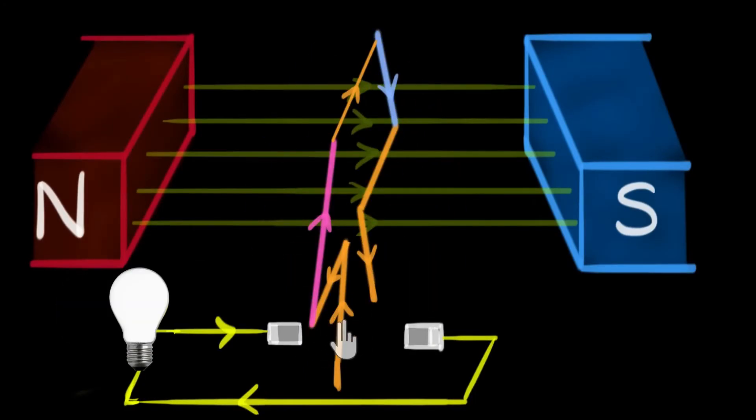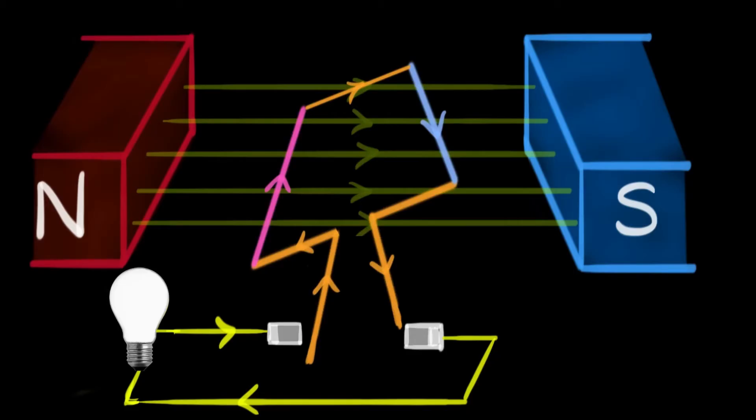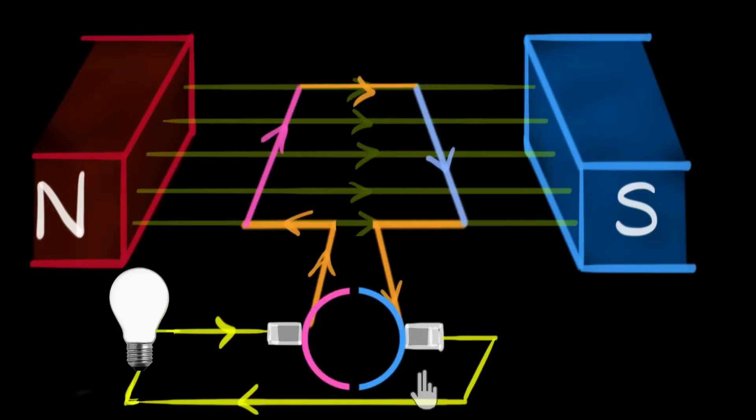This alternating nature of EMF is crucial, but to provide a steady output, the DC generator employs a commutator. The commutator segments connected to the ends of each coil reverse their connections with the brushes every half-turn of the armature. This ingenious mechanism reverses the current direction in each coil at precisely the right moment, ensuring that a unidirectional or direct current flows through the external circuit.